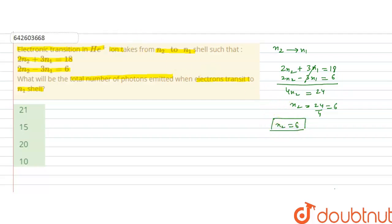If we put the value of N2 in one of the equations, that will give us N1. If we put value of 6 here, it will be 2 into 6 plus 3N1 is equal to 18. So 3N1 is equal to 18 minus 12, that is 6. N1 is equal to 6 by 3, that is 2.